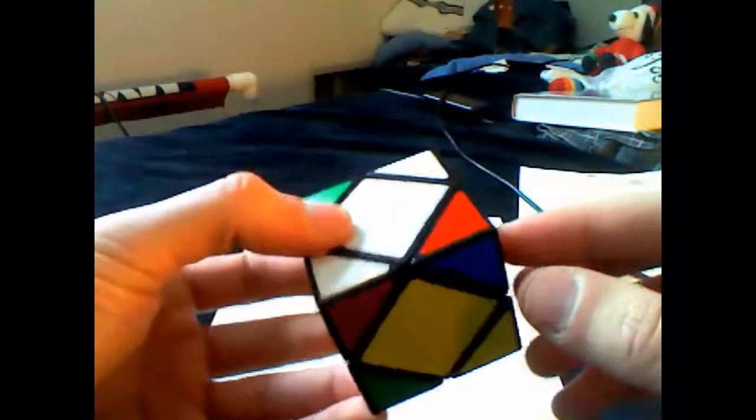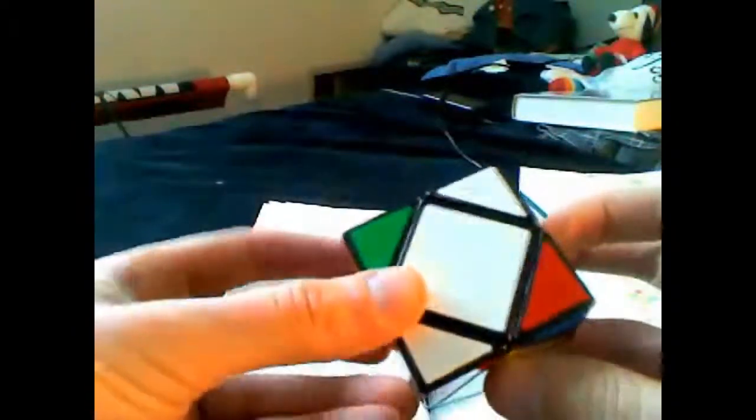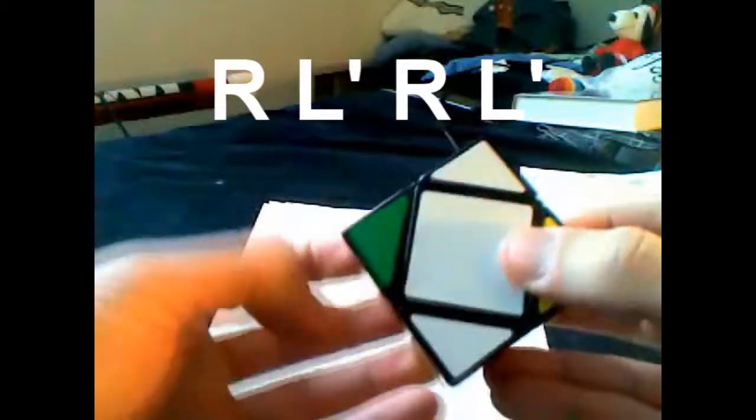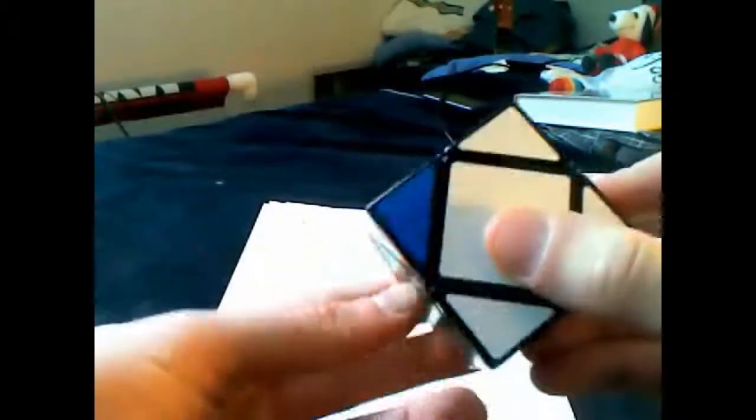Here's a case where two corners are permutated correctly but they're not oriented in this way. All we have to do is R, L prime, R, L prime.